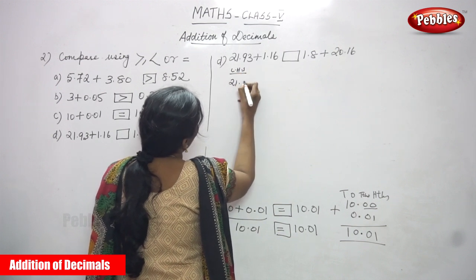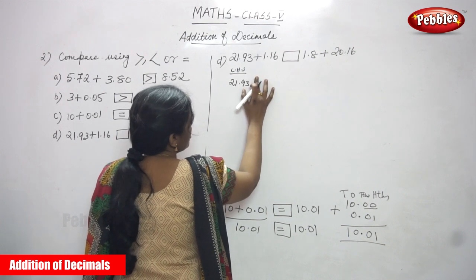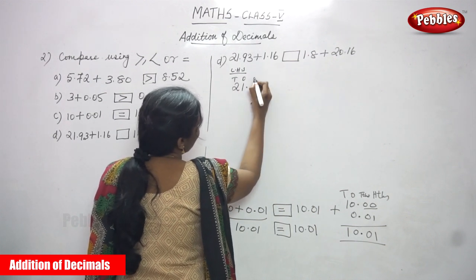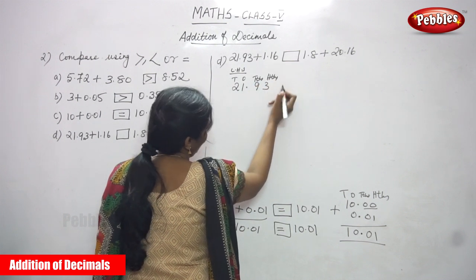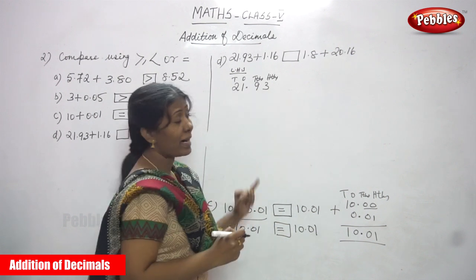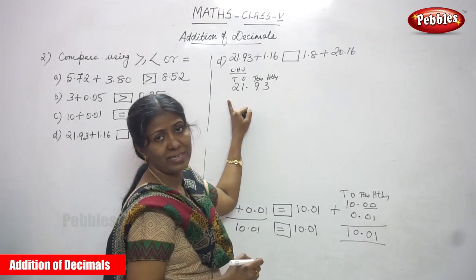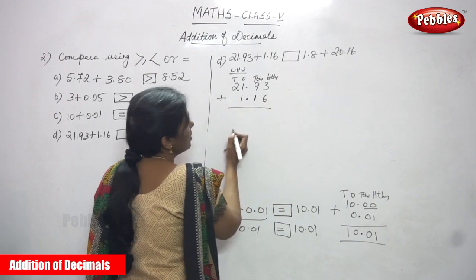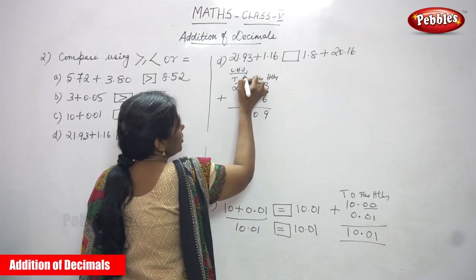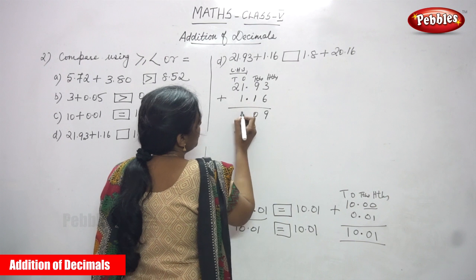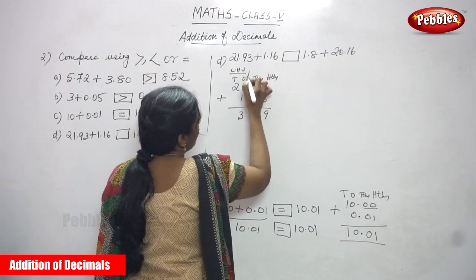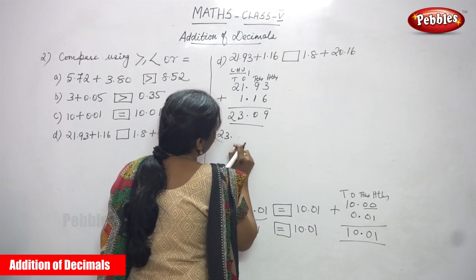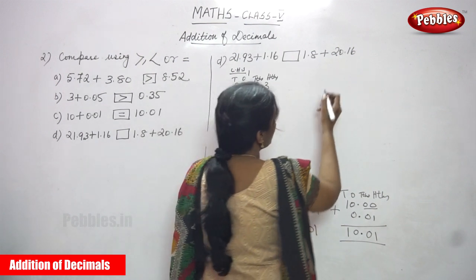LHS: 21.93 plus 1.16. This is ones place, tens place, tth (decimal tens), and hts (hundreds). Before the point is the whole part, after the point is the decimal part. Add: 3 plus 6 is 9, 9 plus 1 is 10 — carry 1 to the ones place. Ones: 1 plus 1 is 2, plus carry is 3. Tens: 2. Left hand side answer is 23.09.